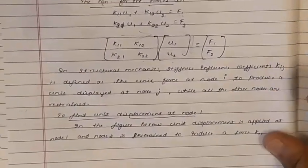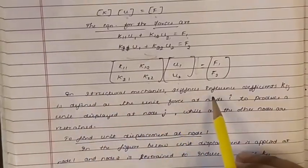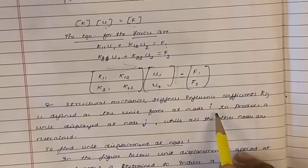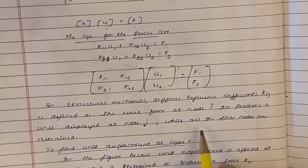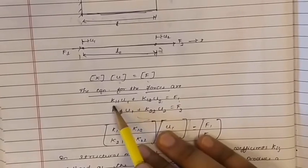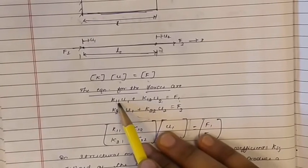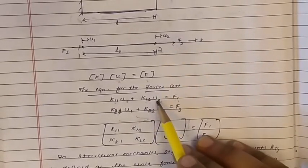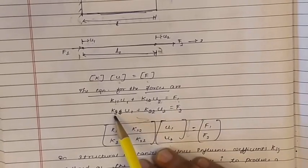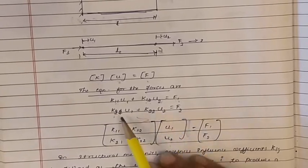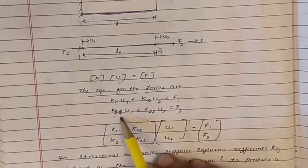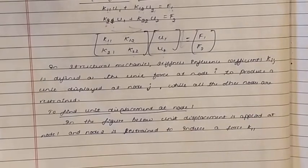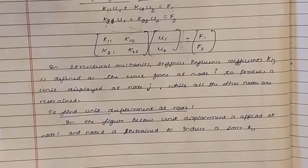In structural mechanics, stiffness influence coefficients kij are defined as: kij is the unit force at node i required to produce a unit displacement at node j while all other nodes are restrained. So k11 is the force at node 1 to produce a displacement at node 1 itself. k12 is the force at node 1 to produce a displacement at node 2. k21 is the force at node 2 to produce a displacement at node 1. Keeping these conditions in mind, we will derive the stiffness matrix for a bar.